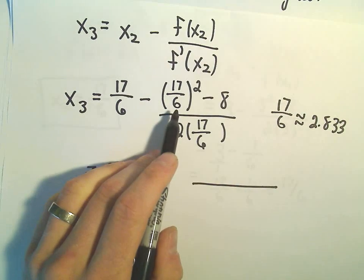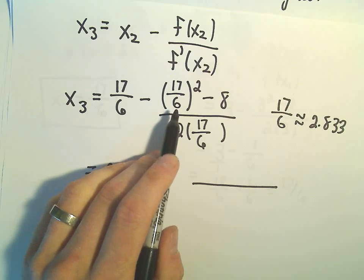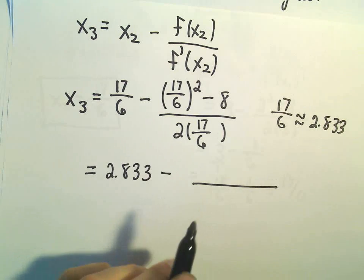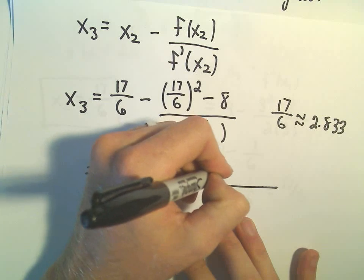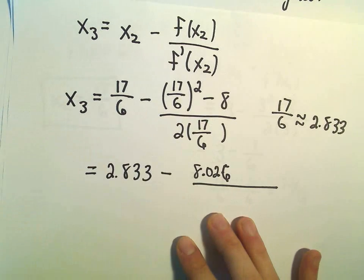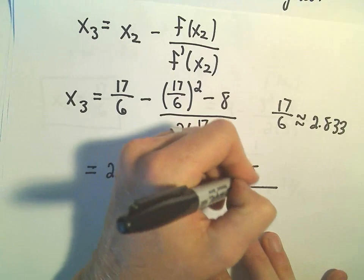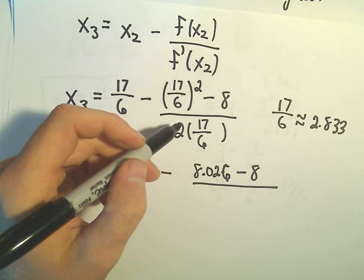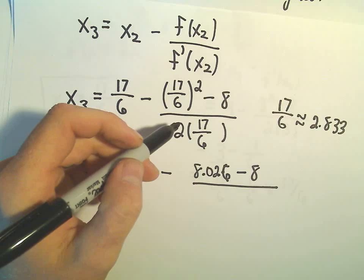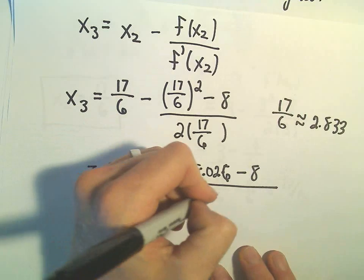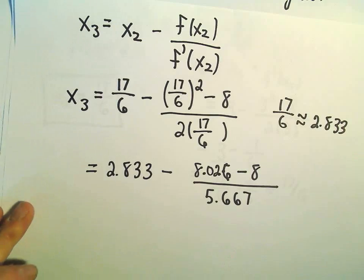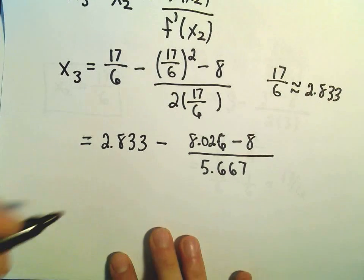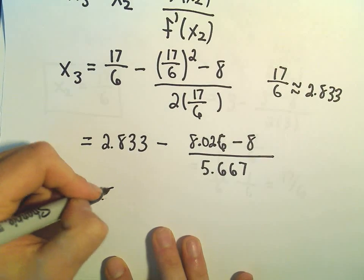So that's what I'm going to plug in here and square it. I'm going to take 2.833 and I'm going to square it. And that's giving me 8.026. Let's round that off to 6. And then minus 8. And then in the denominator, we would have 34 over 6. And I'm getting basically 5.667 for that.